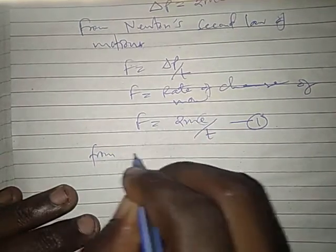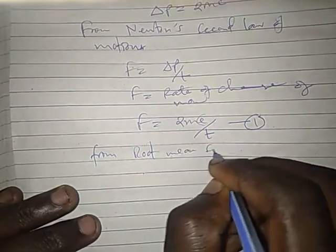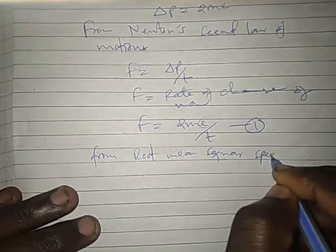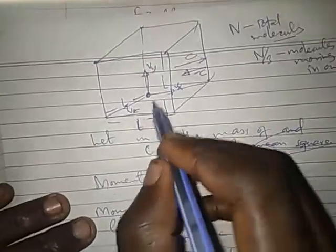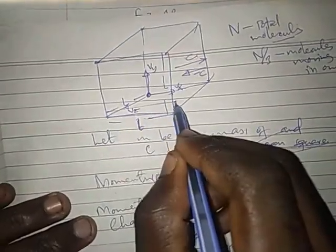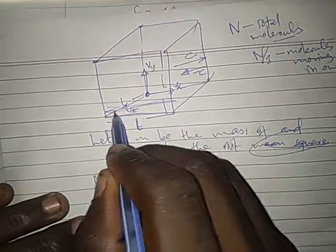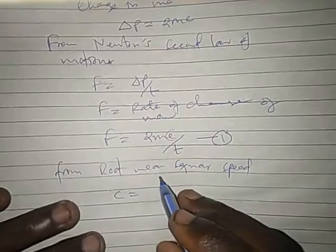Now, we go back and take root mean square speed. From root mean square speed C, the velocity.